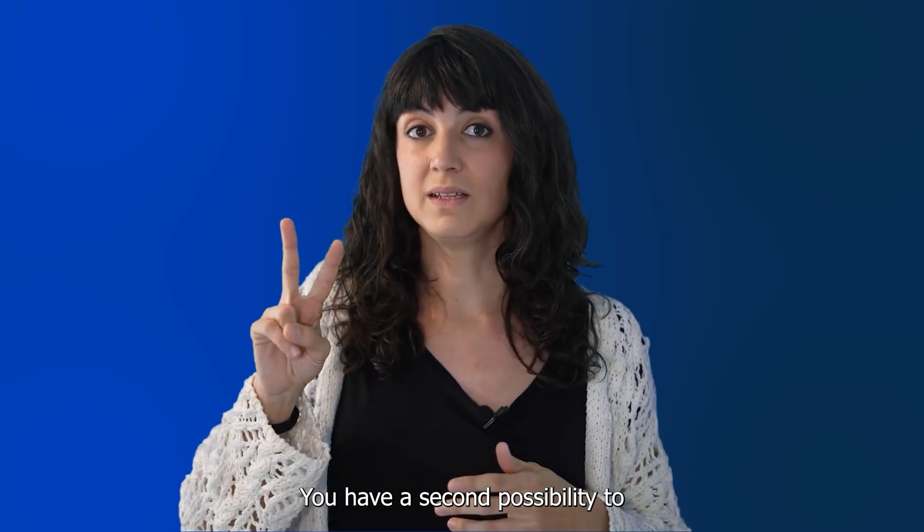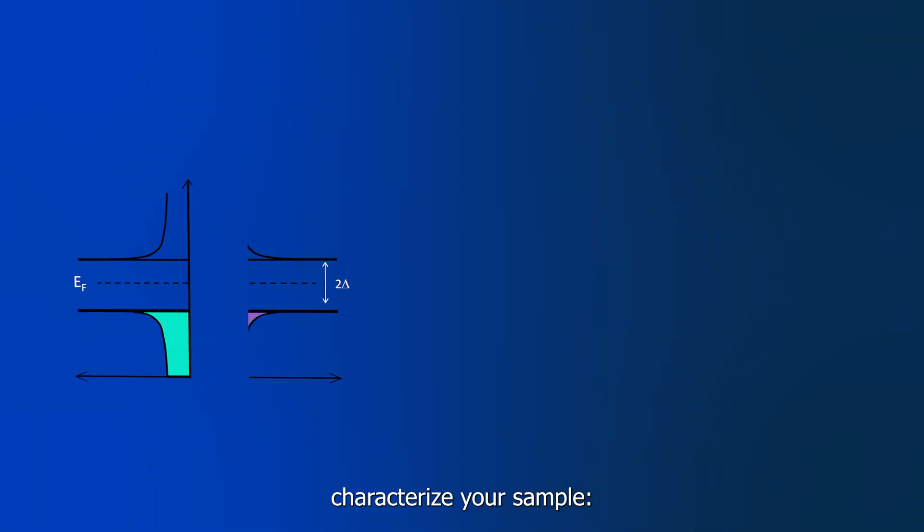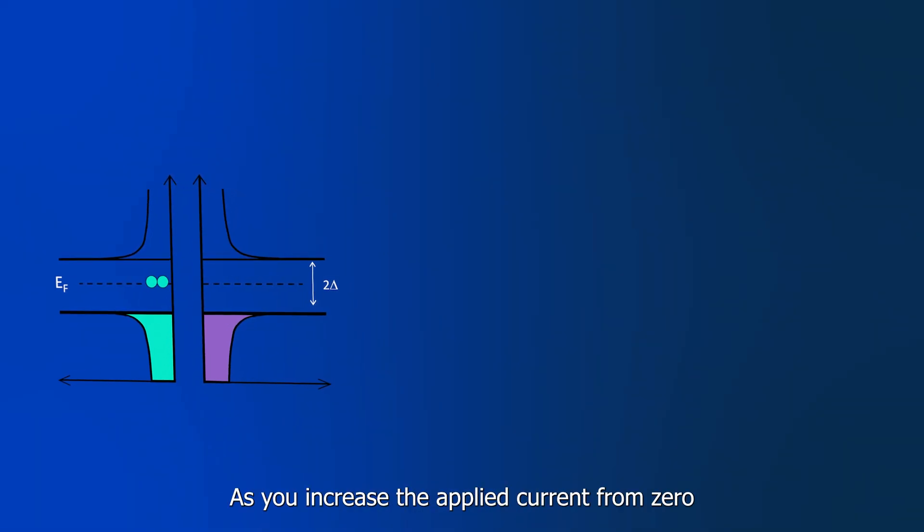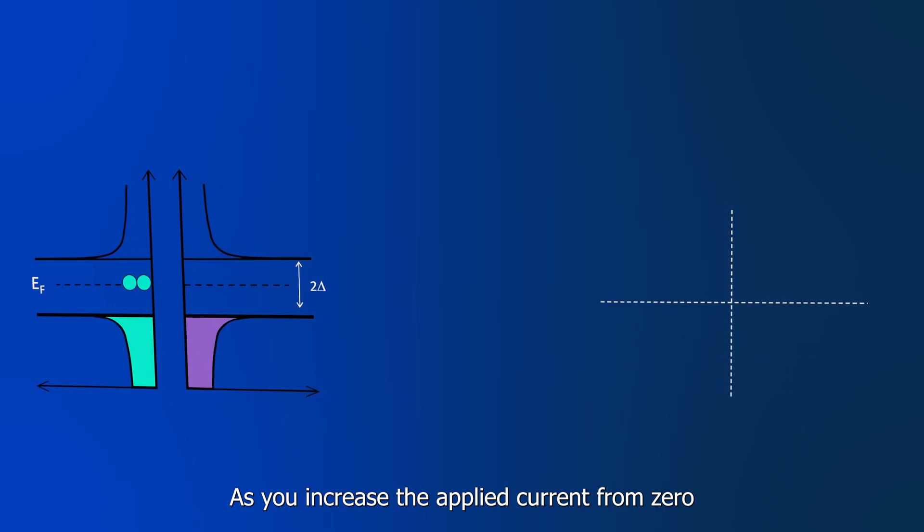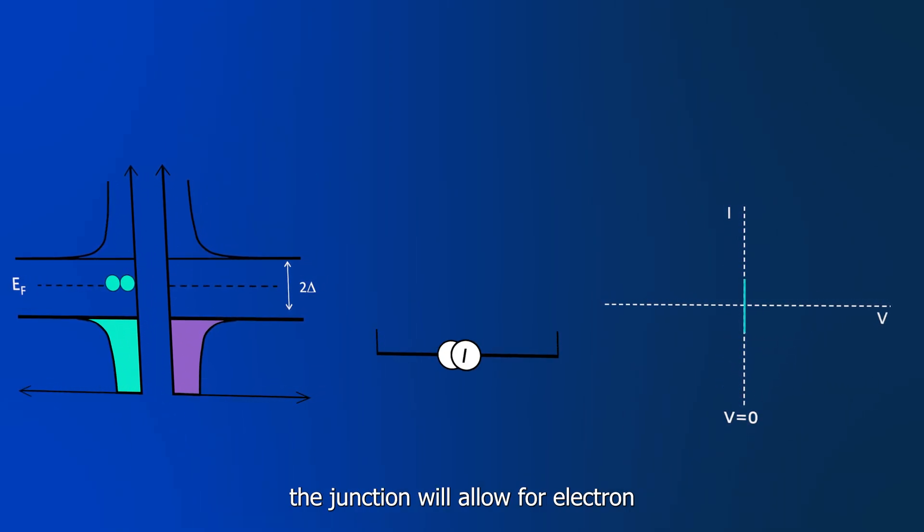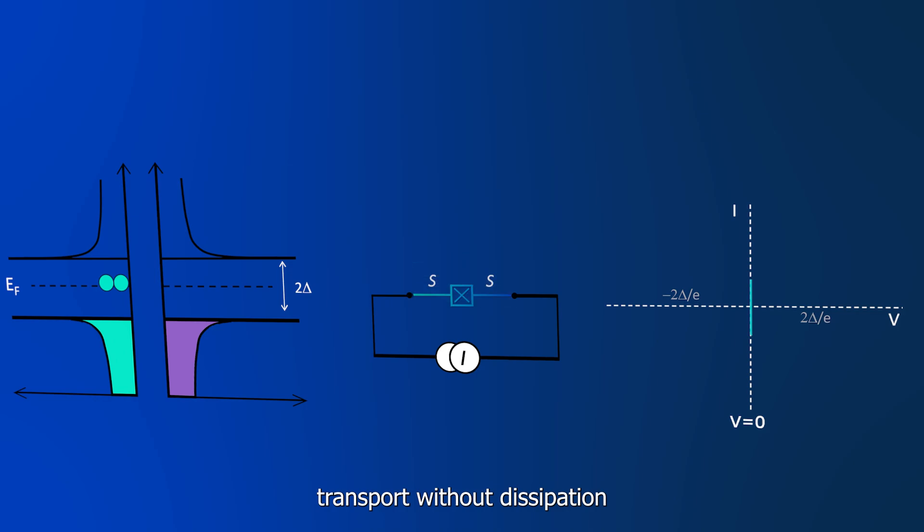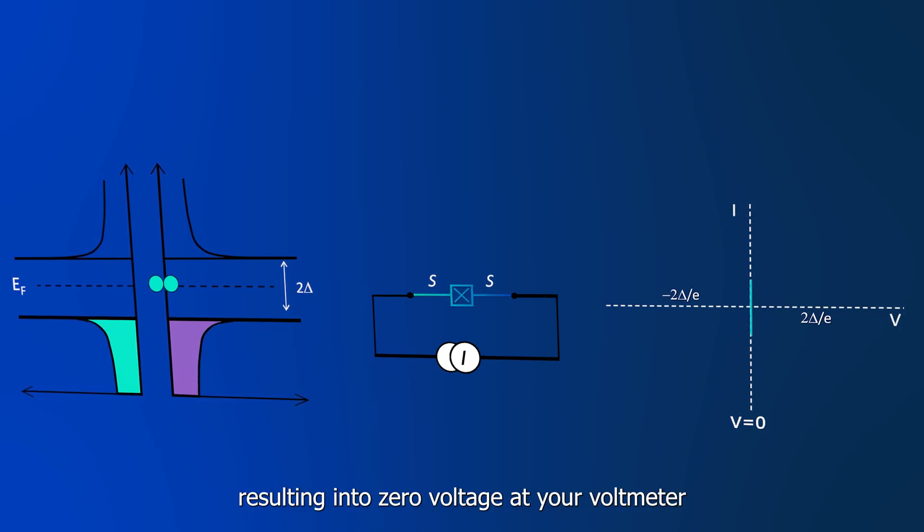You have a second possibility to characterize your sample, current bias. As you increase the applying current from zero, the junction will allow for electron transport without dissipation, resulting into zero voltage at your voltmeter.